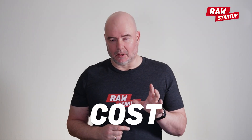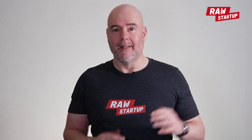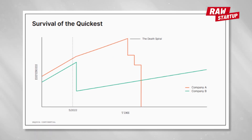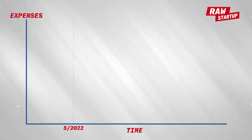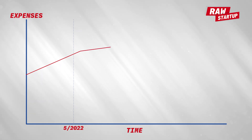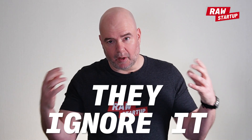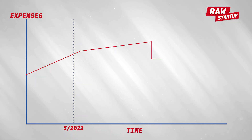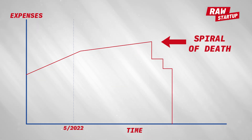How do you change your burn rate? There are two components: costs and revenue. Let's talk briefly about cost and why you need to cut costs quickly if you need more time. Sequoia illustrated this really well in a post they made recently — they call it 'survival of the quickest.' Company A, the red line: something happens in May and they realize sales are not growing like they should or the funding market has changed. Still, Company A decides to do nothing about it. They ignore it and keep letting expenses increase and keep their fingers crossed. A few months later they realize they have to do something. They cut a little and then have to cut again and again. This is a spiral of death — they lost the time and there's nothing they can do about it.